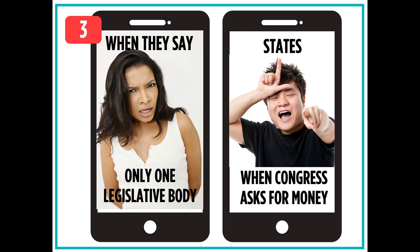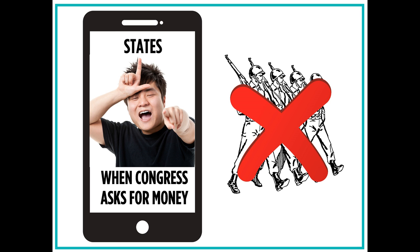Lastly, users can click on the third button and look at memes that will show why the Articles of Confederation ultimately did not work out for the U.S. Take a look at this meme. It implies that Congress did not have the power to tax the states, meaning they could ask the states for money but the states were not required to pay. This was a problem because there was not enough money to fund the army.